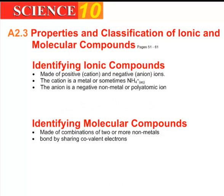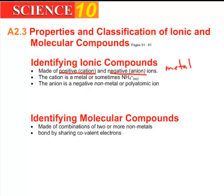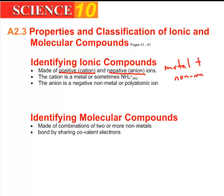First off, just to refresh your memory, for ionic compounds, remember they are made of a positive cation ion combined with a negative anion, which means that they're basically a combination of a metal, which is going to be positively charged, and a non-metal, which is going to be negatively charged.